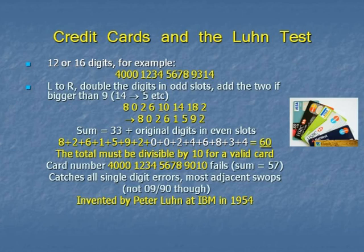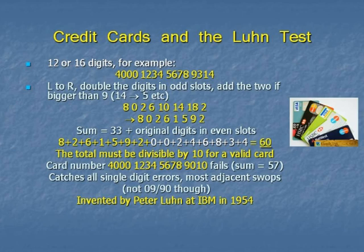The 4 goes to 8, and the 1 goes to 2, and so on. Then you add the 1 and 8, and the 1 and 4, and the 1 and 0 together, and you've got 8, 0, 2, 6, 1, 5, 9, 2. What you now do is add those digits together, and then add the other digits which were in the even-numbered positions. So you're creating a weighted sum — adding the even-position digits to some multiplier times the odd-position digits. If you do that, you end up with 33, and adding the even slots you get 60.